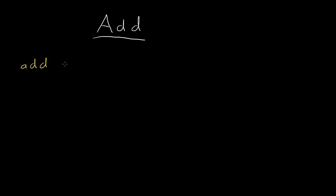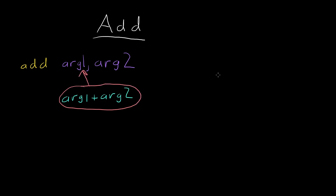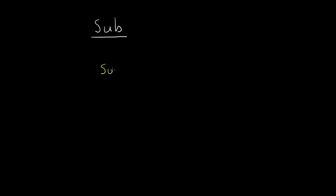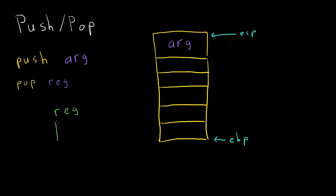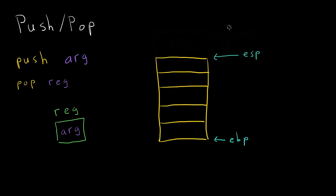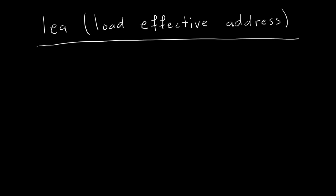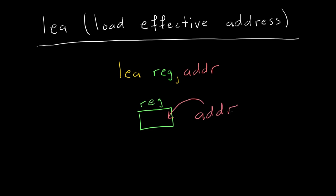The ADD instruction takes two arguments. It adds the values of the two arguments and stores the result in the first argument. For example, if EAX contained the value 10 and we had the instruction ADD EAX, 5, the EAX register would be updated with the value 15. The SUB instruction works exactly the same way as ADD, except the value of the second argument is subtracted from the first. The PUSH instruction places its operand onto the top of the stack — it first decrements the stack pointer, then places its operand into the location it points to. The POP instruction takes a register as an argument, moves the top element of the stack into that register, and then increments the stack pointer. The LEA instruction stands for Load Effective Address. It places the address specified by its second operand into the register specified by its first operand, and is usually used for obtaining a pointer into a memory region.